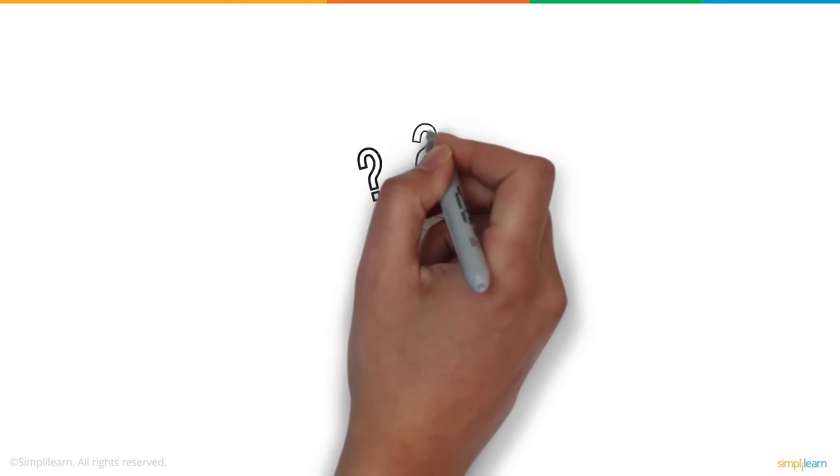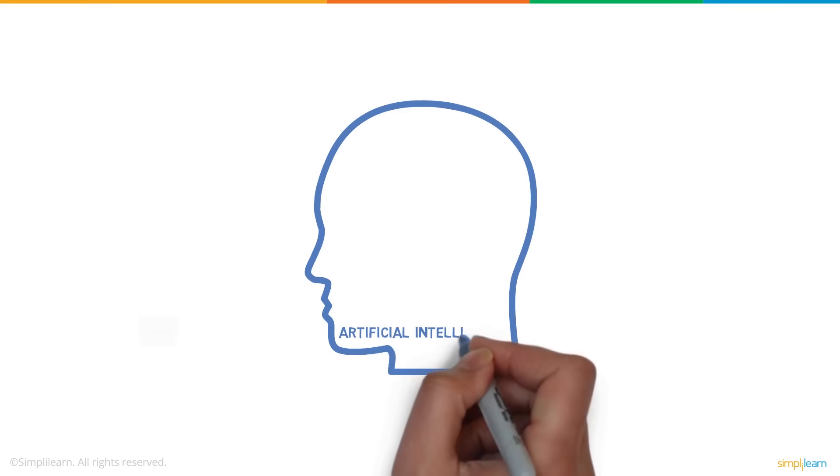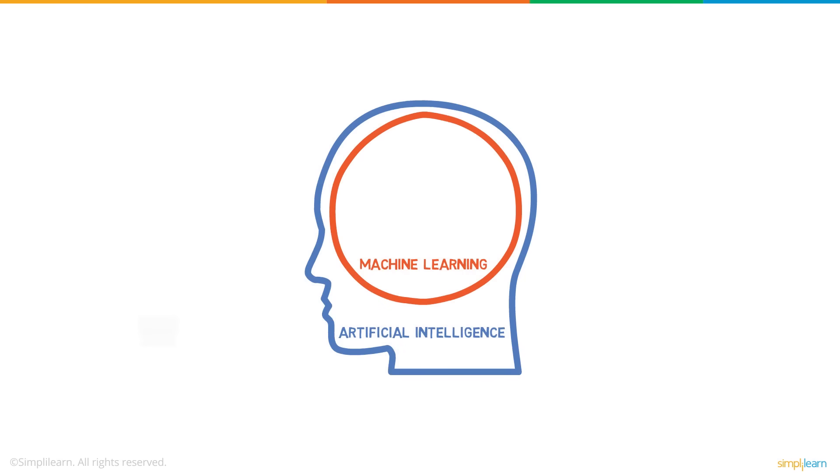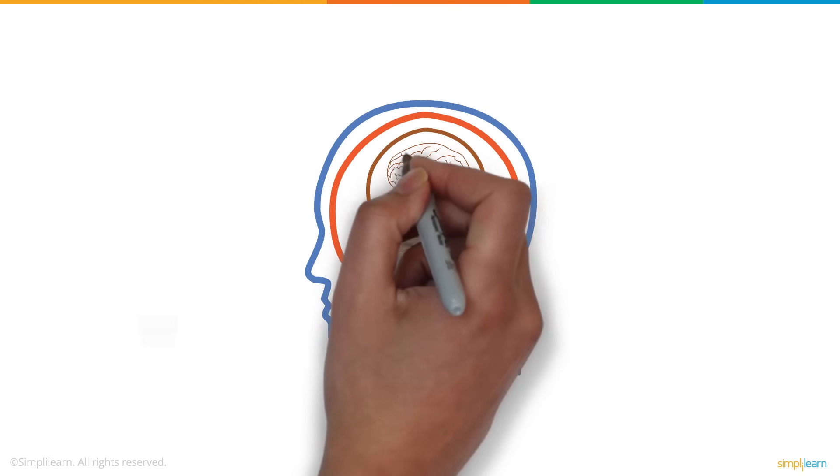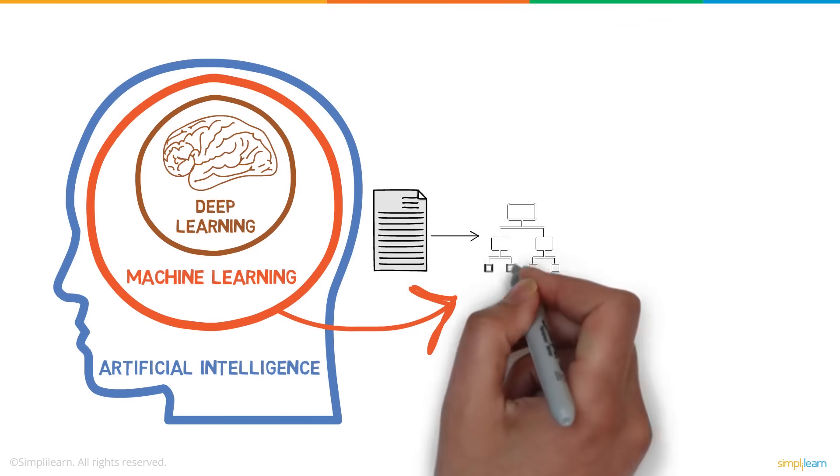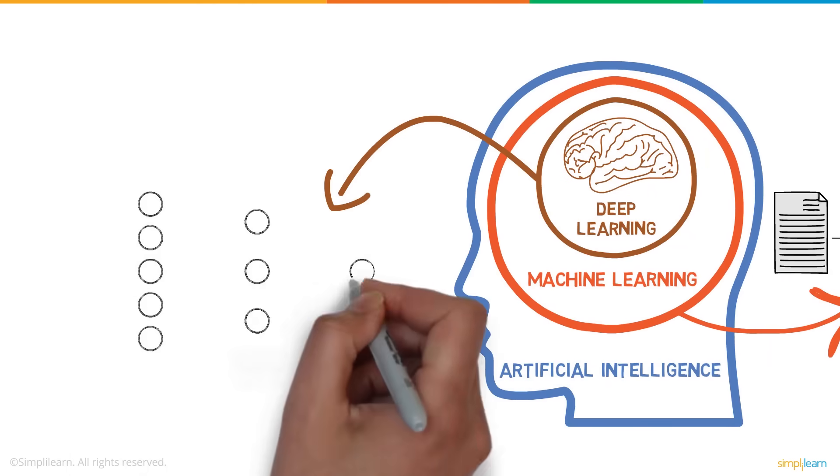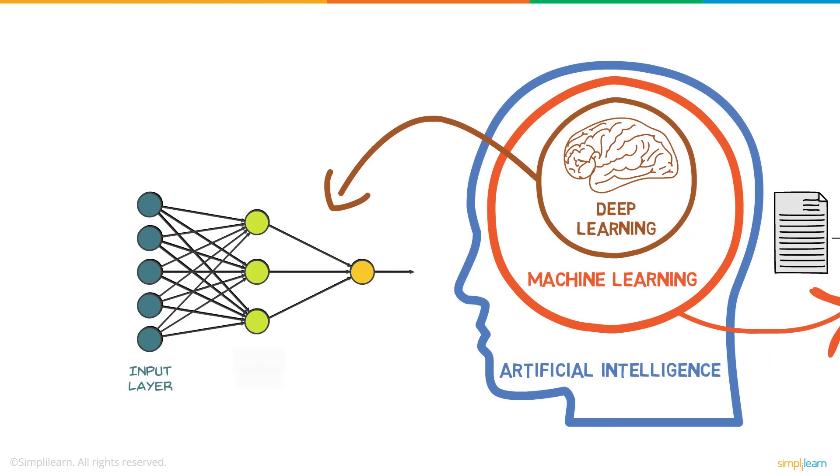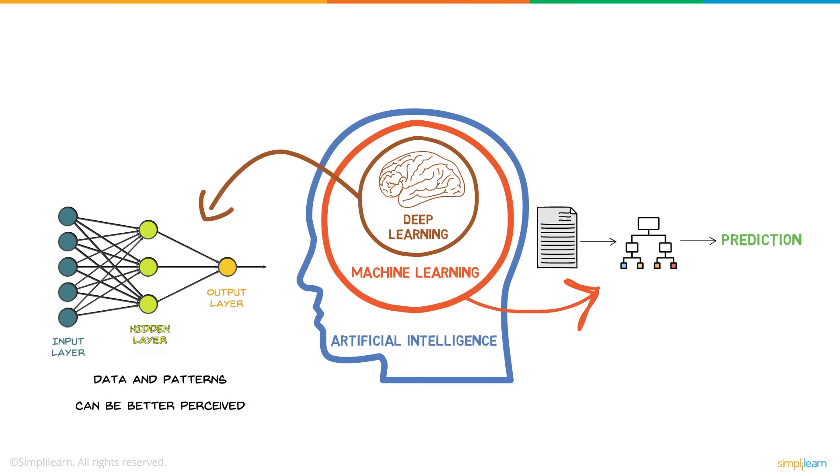You must be wondering, well, how is artificial intelligence different from machine learning and deep learning? We saw what AI is. Machine learning is a technique to achieve AI, and deep learning, in turn, is a subset of machine learning. Machine learning provides a machine with the capability to learn from data and experience through algorithms. Deep learning does this learning through ways inspired by the human brain. This means, through deep learning, data and patterns can be better perceived.